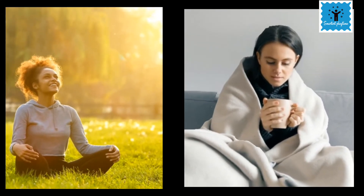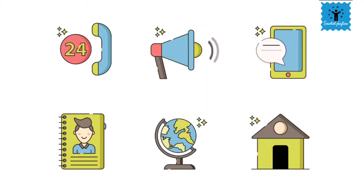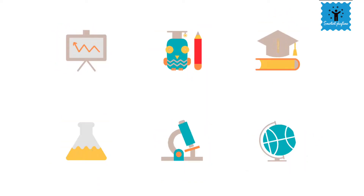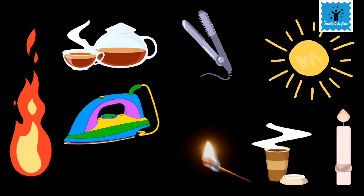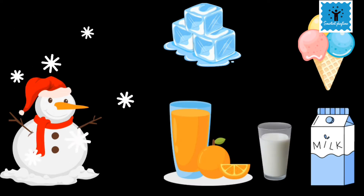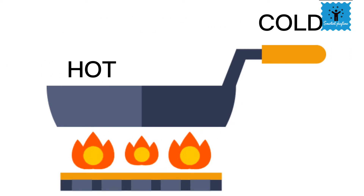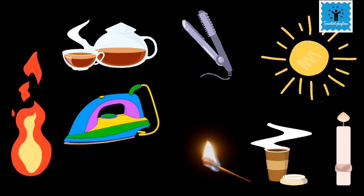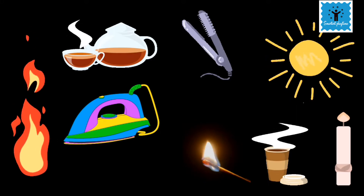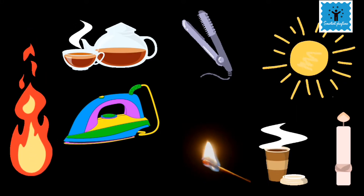In our daily routine we come across a number of objects, out of which some are hot while other objects are cold. For example, when a frying pan is kept on a burning gas stove it becomes hot, but the handle of the pan is cold.